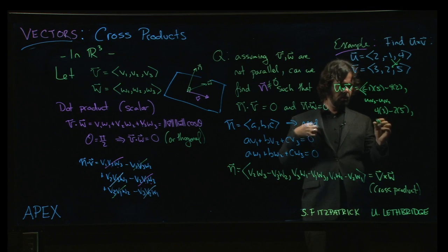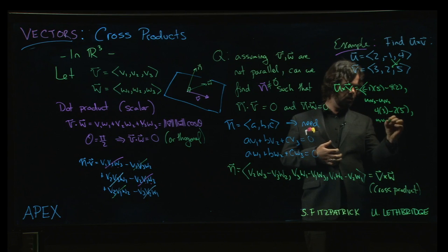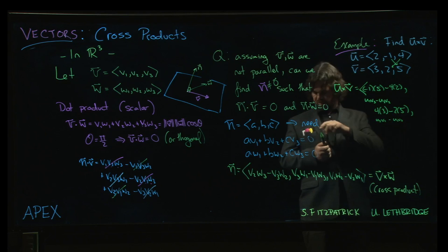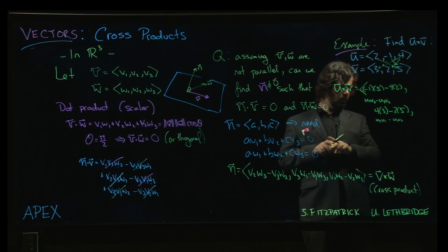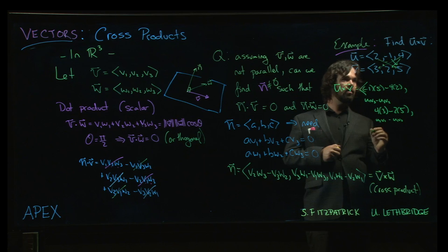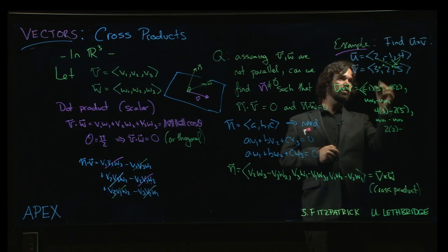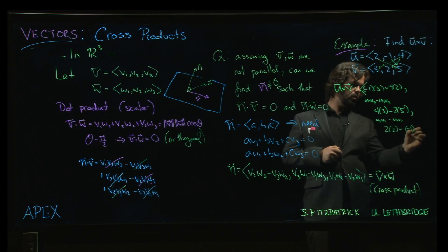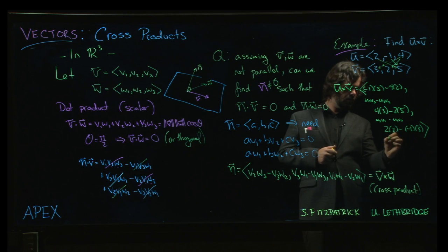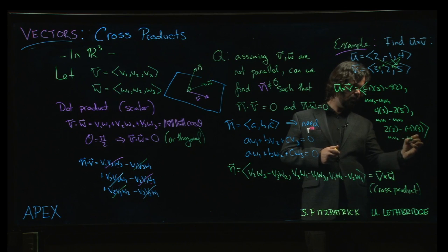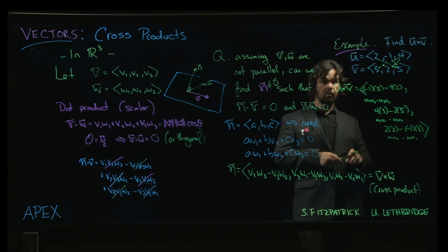So what is this one? It's u3 v1 minus u1 v3. All right, so we're going to be 2 times 2 minus 1 times 3. Okay, so that is u1 v2 minus u2 v1. That's what goes in the last spot there.